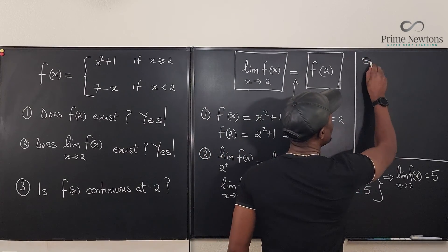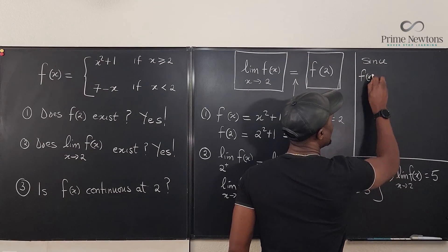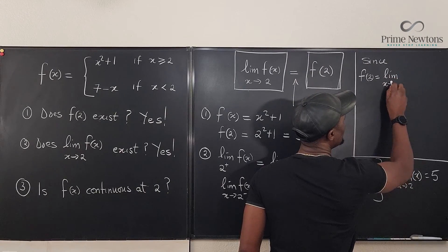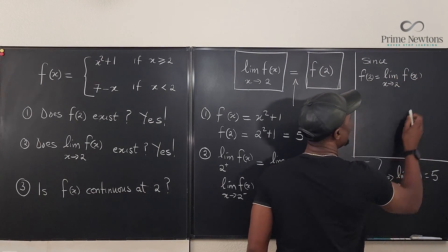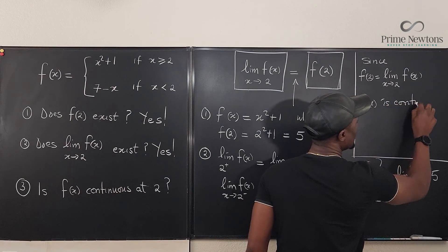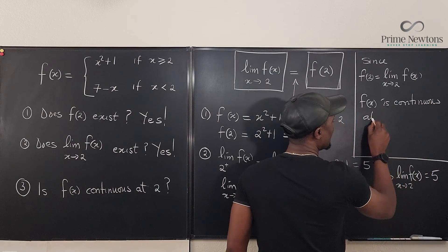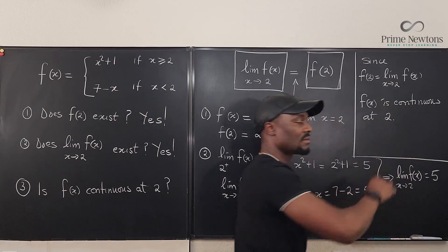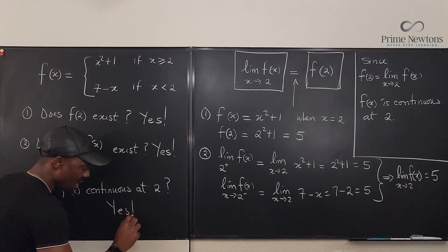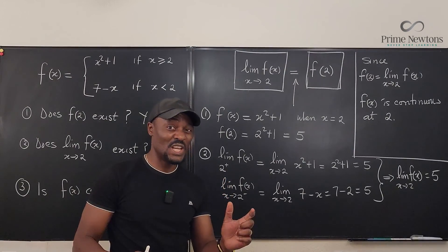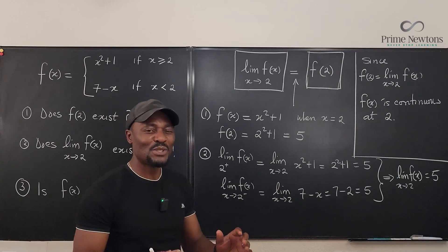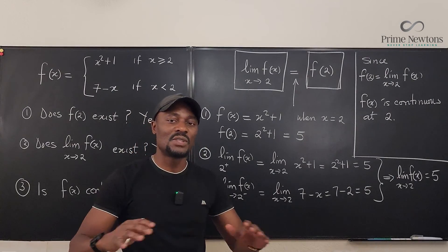Since f(2) equals the limit as x approaches 2 of f(x), f(x) is continuous at 2. Is f(x) continuous at 2? Yes. If any of the things you have seen in this video were not true — even if everything else is right but one thing is missing — the function would not be continuous.